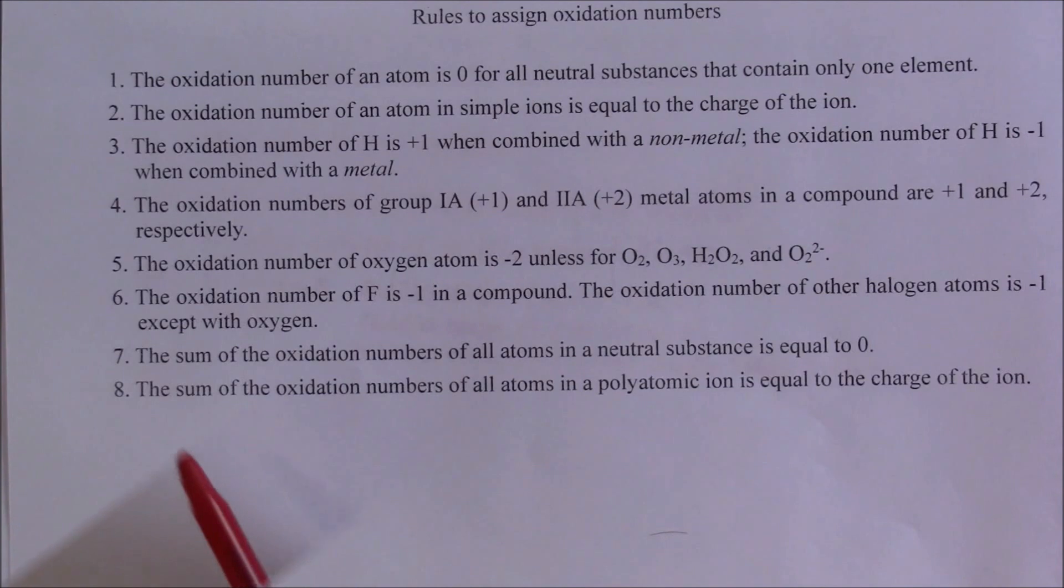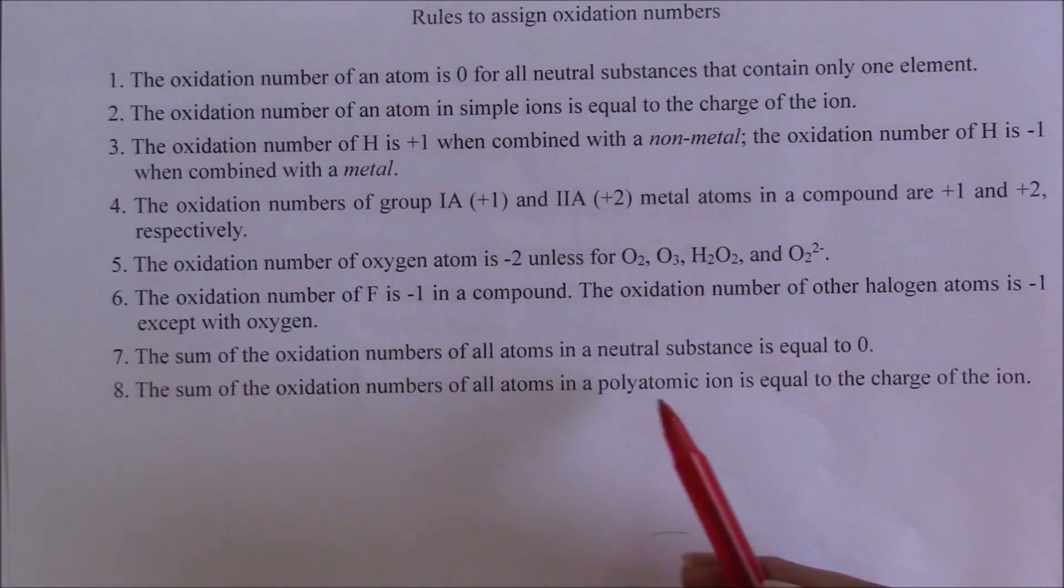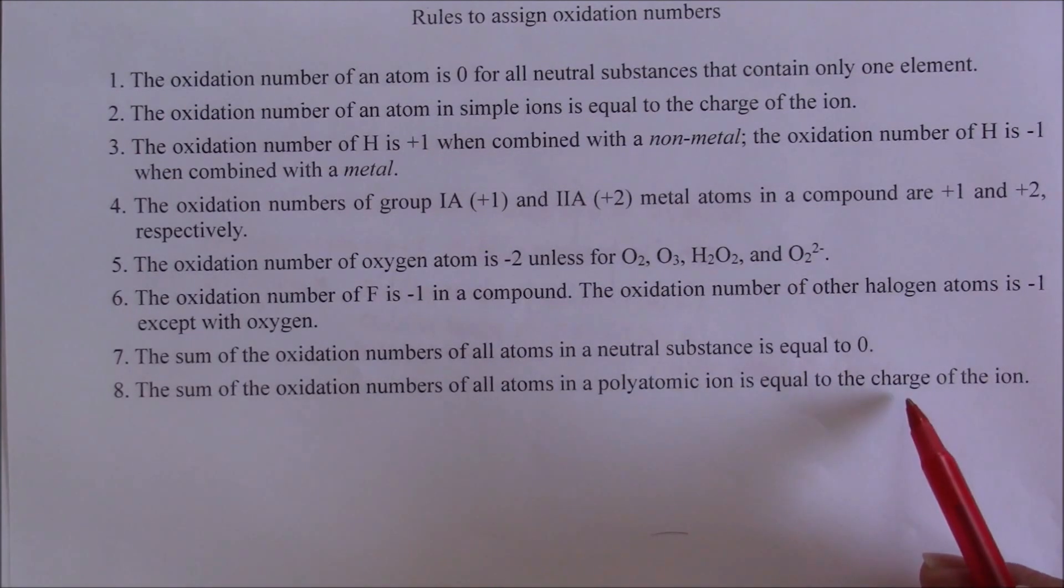therefore we need to use rule number 8 to set up an equation. The sum of the oxidation numbers of all atoms in a polyatomic ion is equal to the charge of the ion.